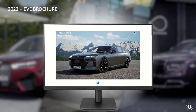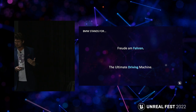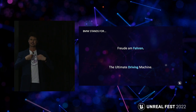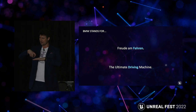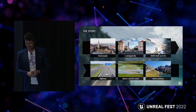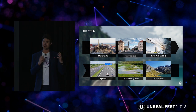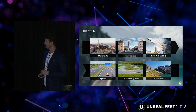BMW's brand claim is 'Freude am Fahren' — the ultimate driving machine. When I saw that the cars in the digital brochure were just standing there, I asked the team: why don't we hand over a digital asset where the customer's individualized car is actually driving, not just standing with cameras flying around? So what we came up with is the EVE Emotional Drive — with a small story around it. We start in the middle of Munich, drive along the Ludwigstraße, see our headquarters, go out into the mountains, have a lovely alpine road, and end with a beautiful shot.